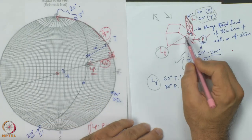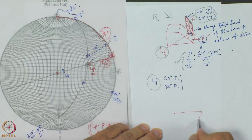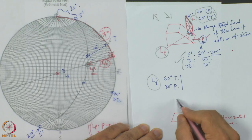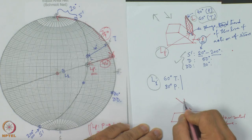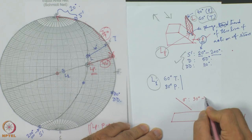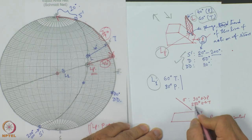Imagine instead of the P plane being inclined, consider the P plane is horizontal. What I call P0 is a horizontal plane, and there is a stress acting on it. Call it sigma — give its plunge and trend. The plunge is 30 degrees and the trend is 280 degrees, measured clockwise from geographic north.